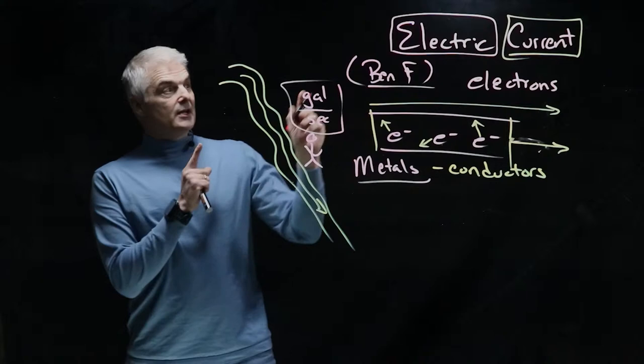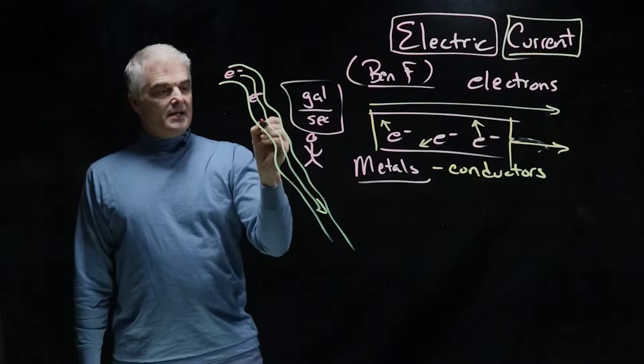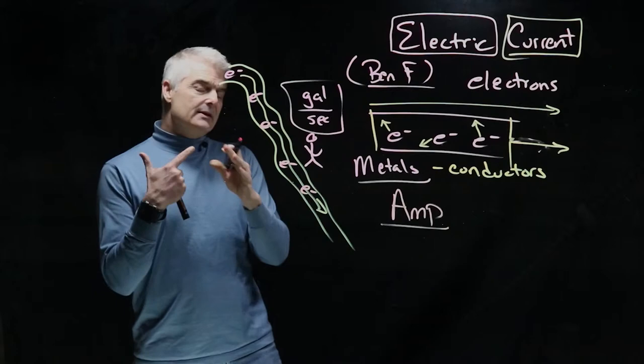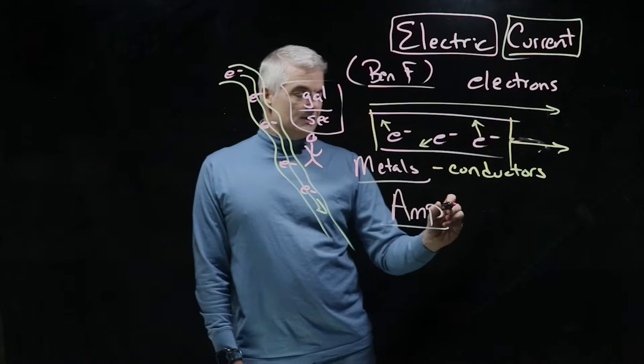When we talk about electricity and the current - the electric current - it has to do with the number of electrons that are flowing down the river, so to speak, through the wire. And we measure that in something called an amp, or an ampere, not to be confused with an amplifier, but an ampere named after a famous physicist.